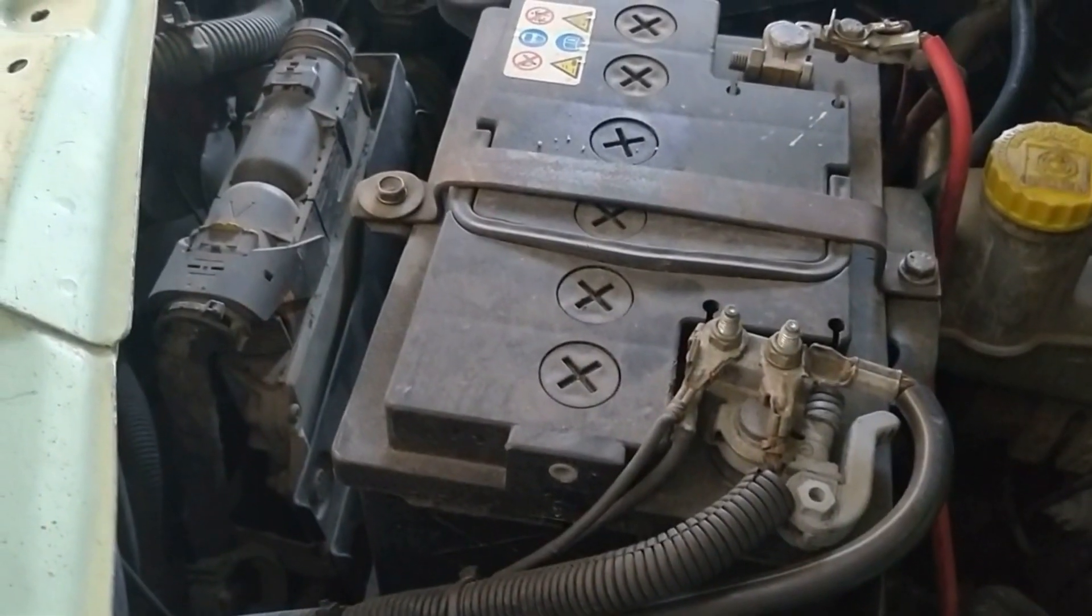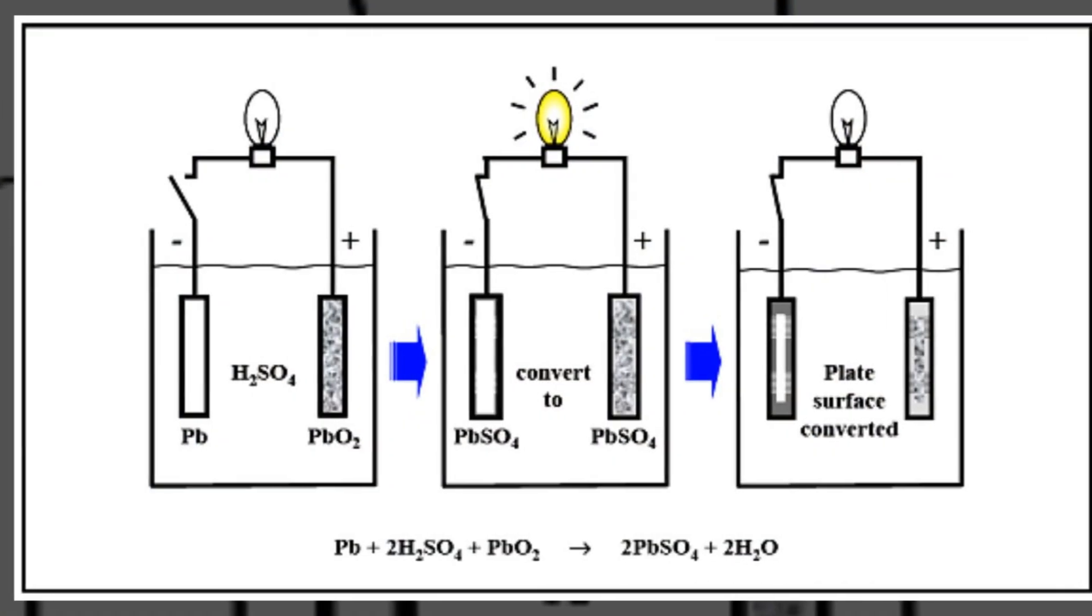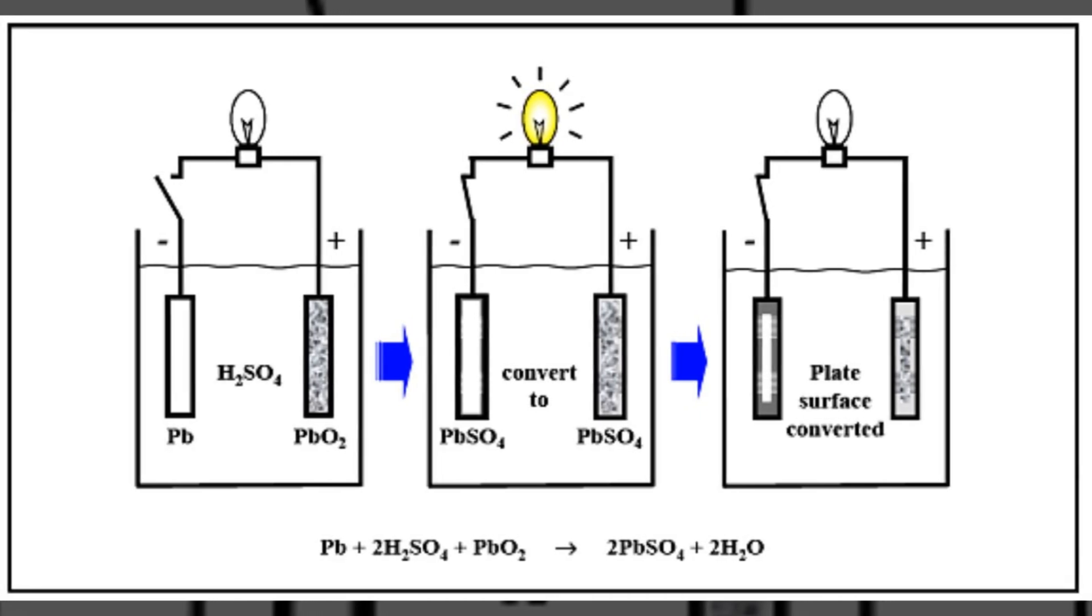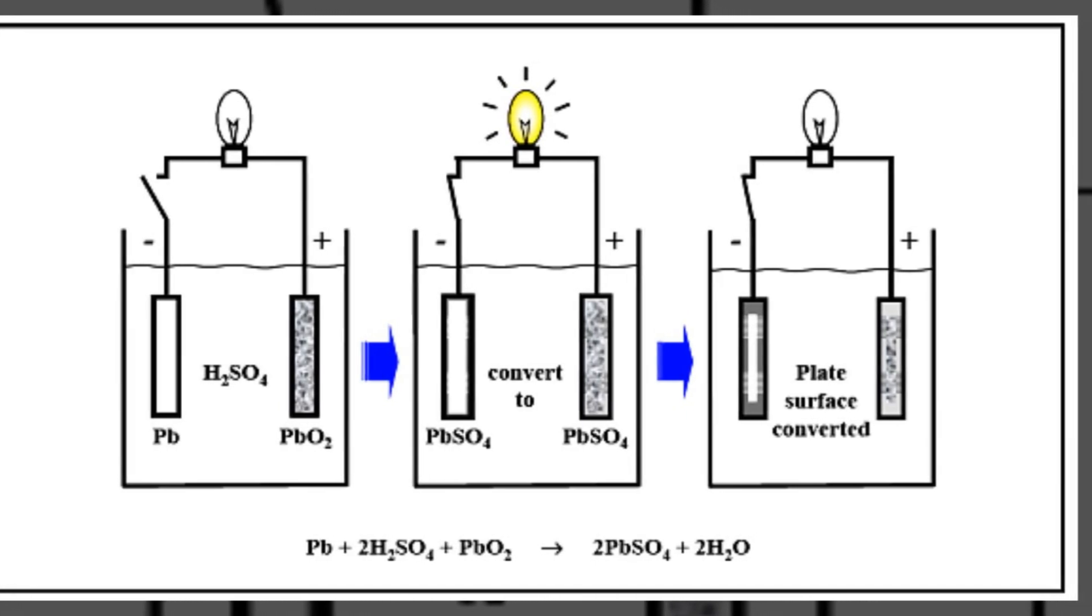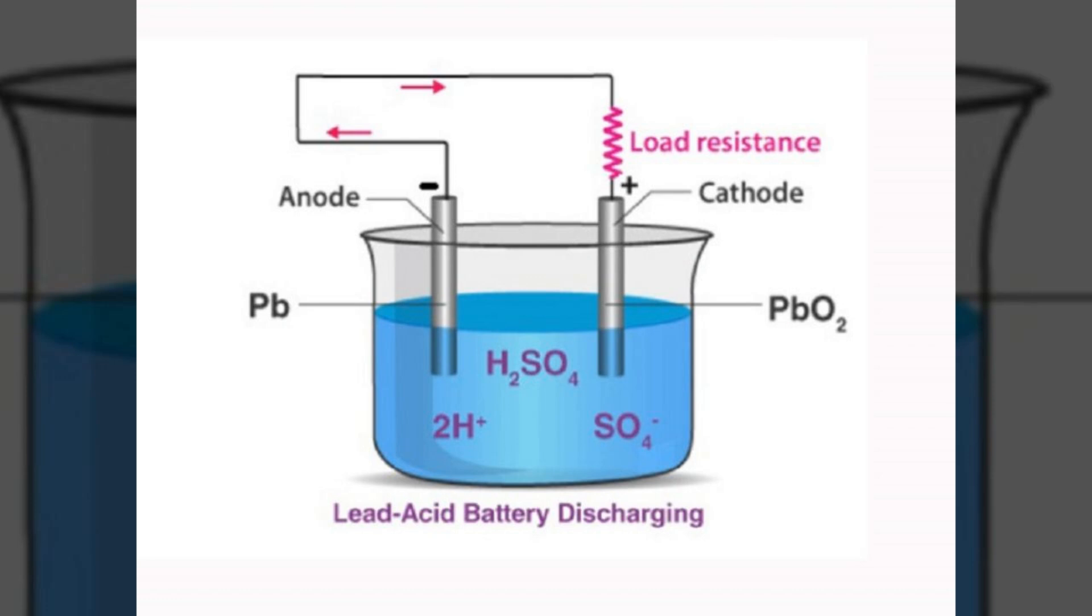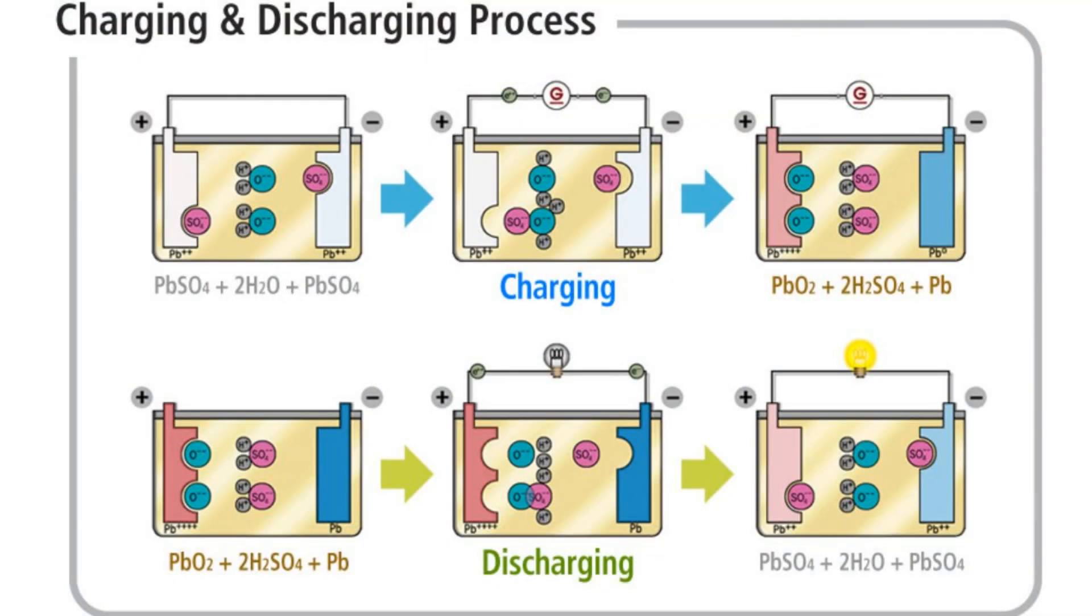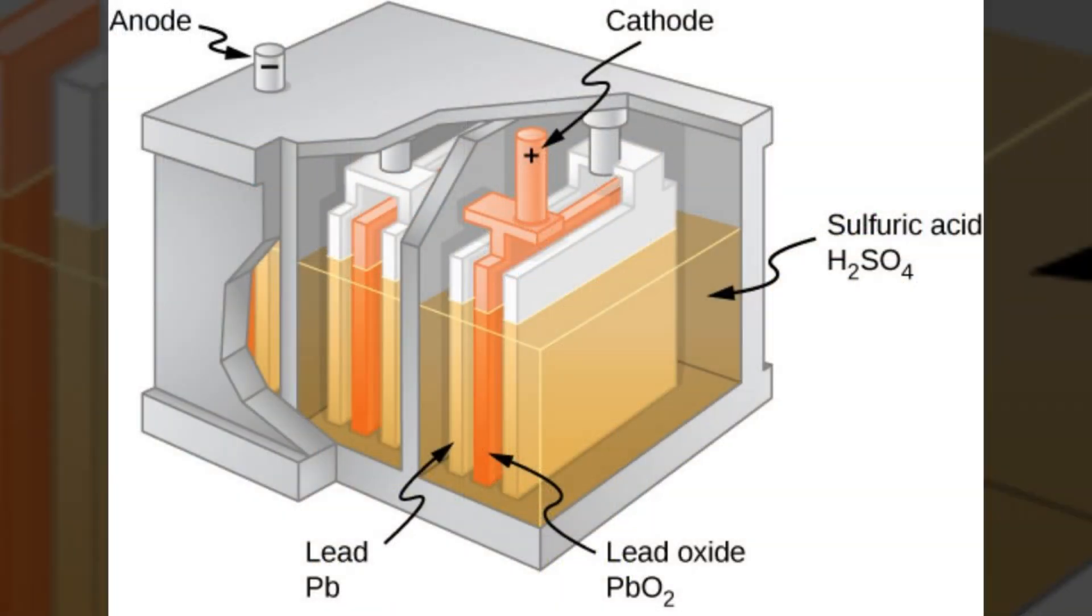Now let's summarize the key points. A lead acid battery works by a series of chemical reactions between lead, lead dioxide and sulfuric acid. When the battery discharges, these materials react to form lead sulfate and water, releasing electrical energy. When the battery recharges, the lead sulfate breaks down, reforming the original materials and preparing the battery to provide power again.